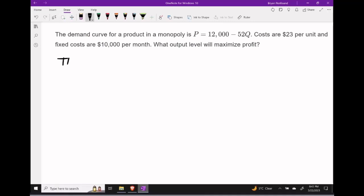Let's begin by finding the total revenue function. We can take the demand of 12,000 - 52Q and multiply by Q. This gives us TR = 12,000Q - 52Q².